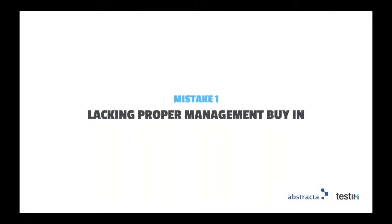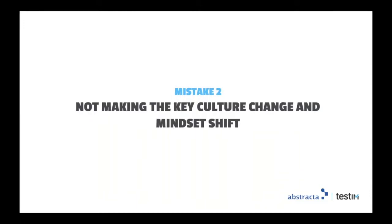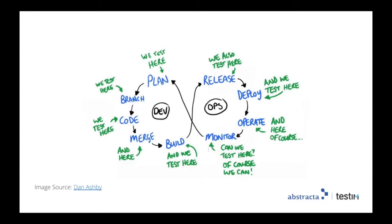Moving forward to the second mistake — cultural changes and the shift in mindset. There is an image from Dan Ashby that I really like. You can see that there is no specific activity for testing — testing should be part of every single task, making it a continuous activity. It's part of everything that we do. Part of the mindset shift we should make is related to that. Testing should be something everyone on the team is doing all the time as part of all of their activities, not something that only testers do.